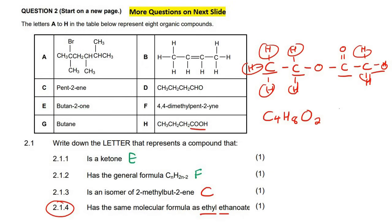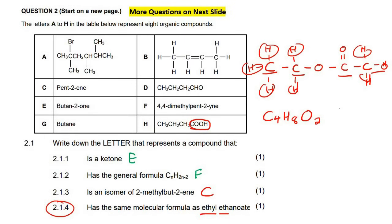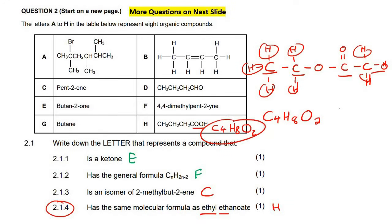A carboxylic acid always has that COO part — see how it has that C double-bond oxygen, hydrogen part. Let's just make sure it has 4 carbons: 1, 2, 3, 4. Perfect. So this would be an isomer of ethyl ethanoate. Remember, carboxylic acids and esters are isomers of each other. Checking the molecular formula: 4 carbons, 8 hydrogens, and 2 oxygens. That's perfect.